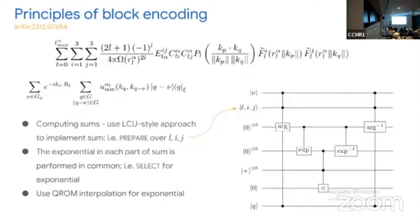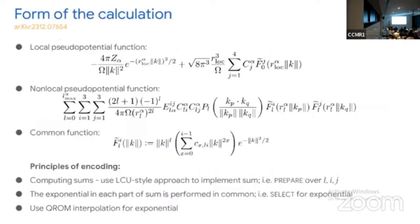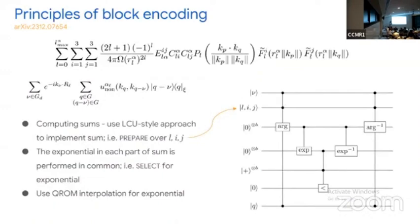The F functions are the only parts with exponentials, and when we have products of F's we can bundle the two exponentials together. For everything in the sums, we only need one exponential. In the block encoding, we compute what the argument of the exponential needs to be and then do coherent evaluation of the exponential — that's the hardest function to evaluate. Everything else is just additions and multiplications.